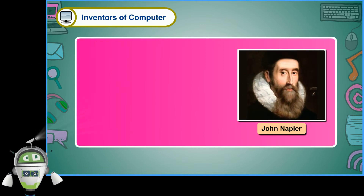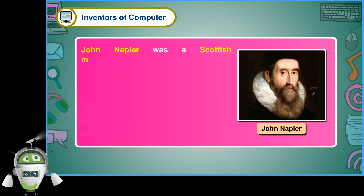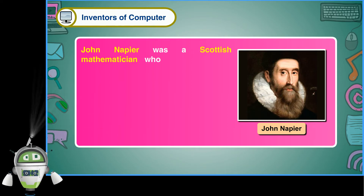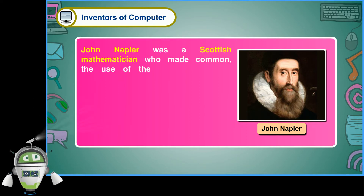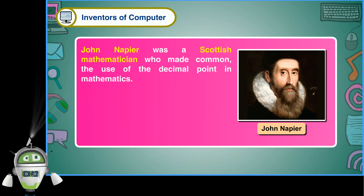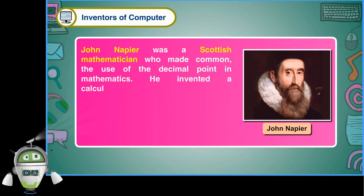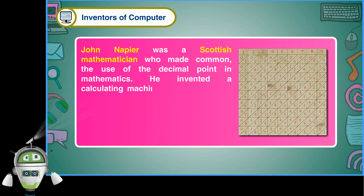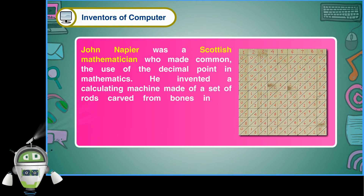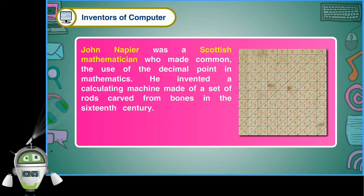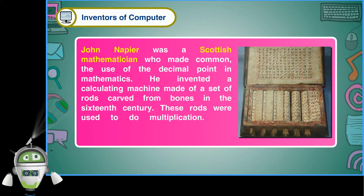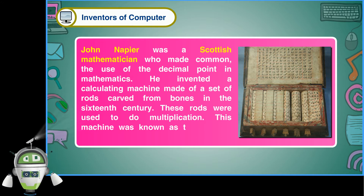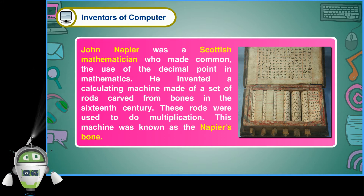John Napier was a Scottish mathematician who made common the use of the decimal point in mathematics. He invented a calculating machine made of a set of rods carved from bones in the 16th century. These rods were used to do multiplication. This machine was known as Napier's Bone.